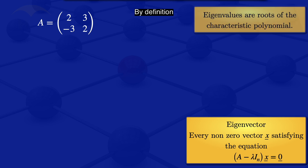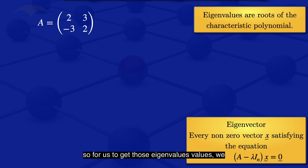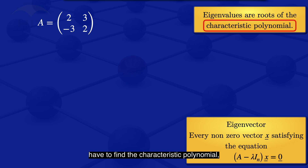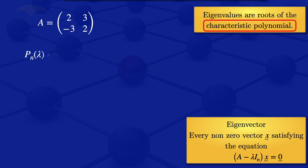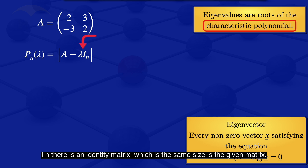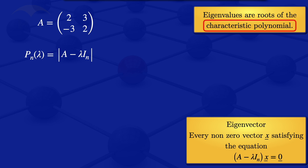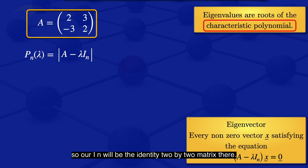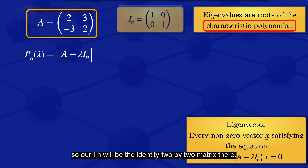By definition, eigenvalues are roots of the characteristic polynomial. So to get those eigenvalues, we have to find the characteristic polynomial first. The characteristic polynomial, which we denote by P_N of lambda, is the determinant of A minus lambda I_N. The I_N there is an identity matrix which has the same size as the given matrix. In this case, we are having a 2 by 2 matrix, so our I_N will be the 2 by 2 identity matrix.